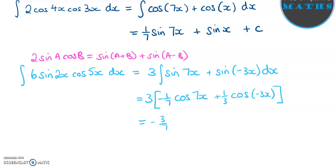So we end up with minus 3 over 7, cos 7x, plus cos of negative 3x. Now you might want to tidy it up a little bit, it's probably not necessary, but you can recognize that because cos is symmetrical around the y-axis, cos of minus 3x is also the same as cos of 3x, so you can rewrite that as cos 3x if you needed to show that it was equal to something.